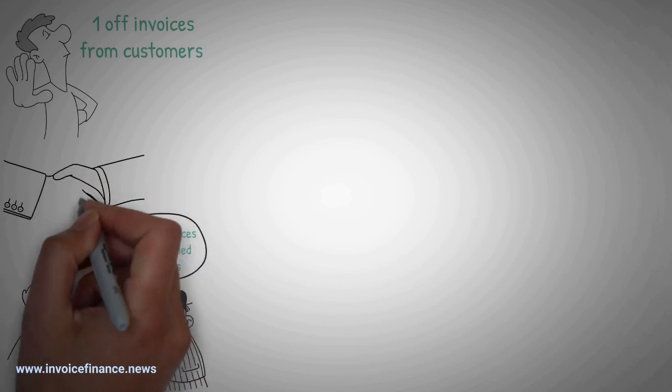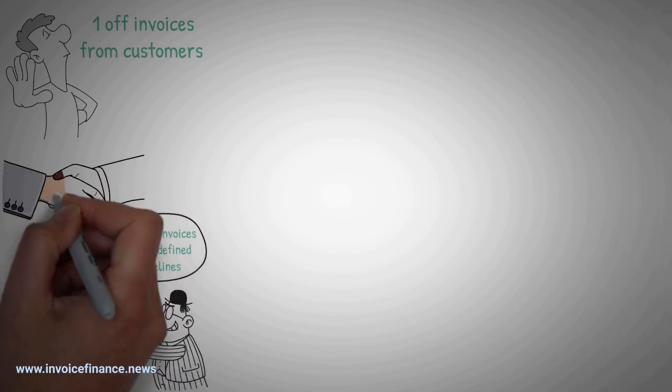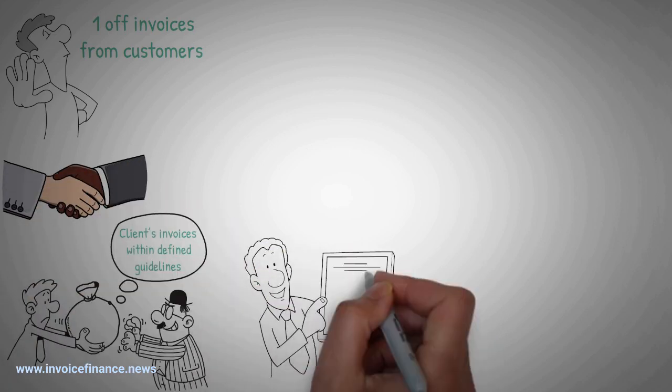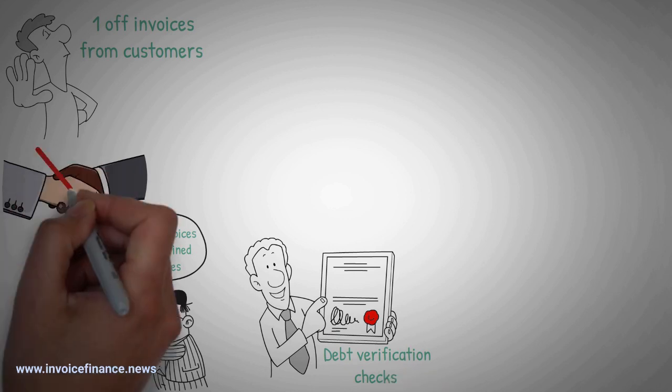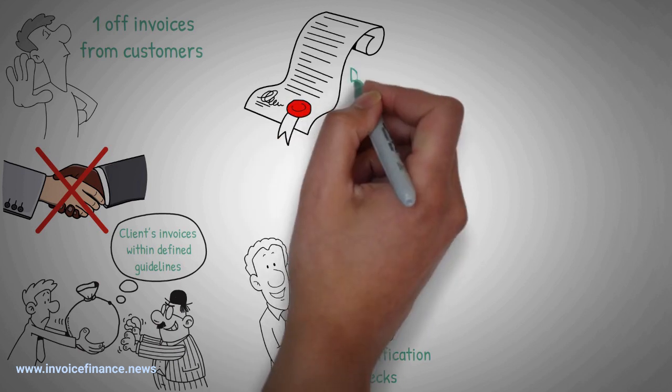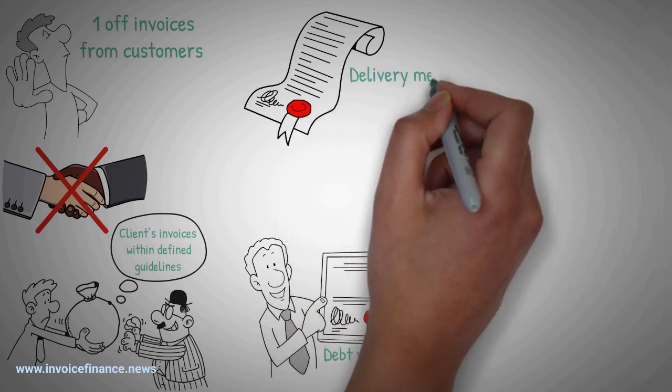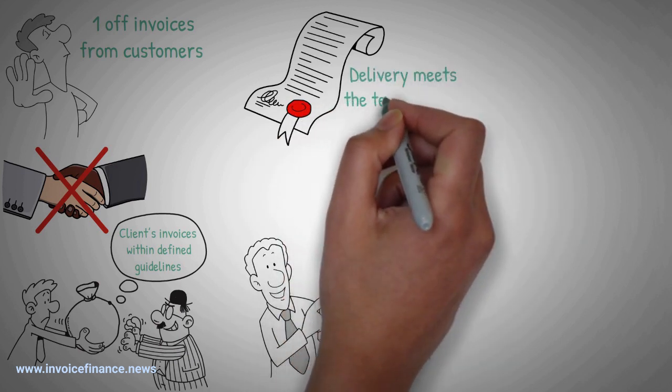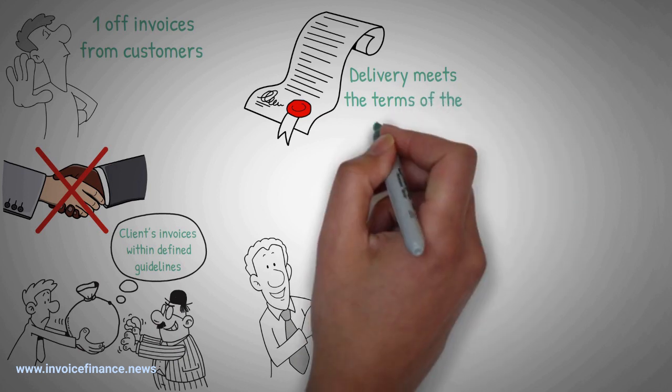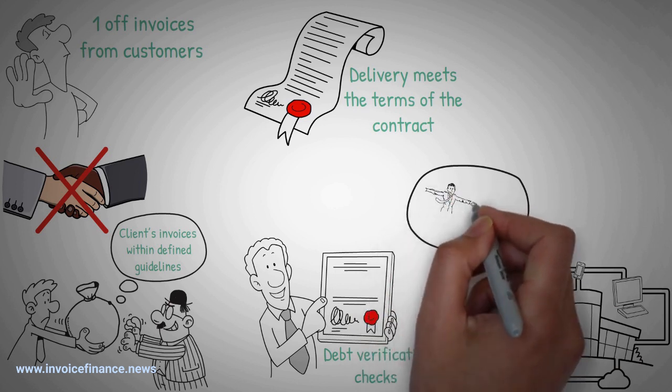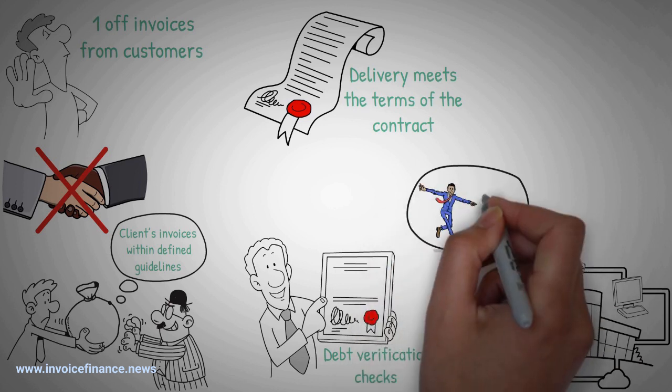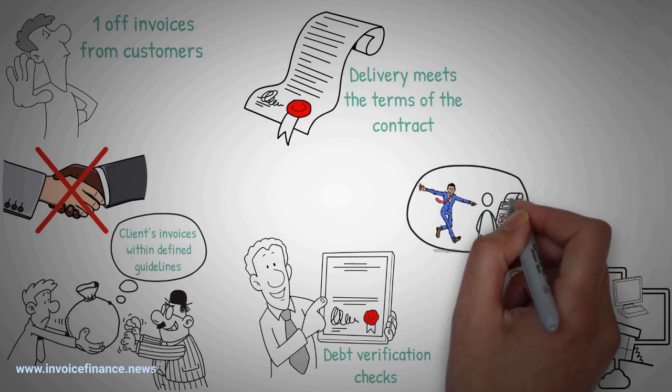A relationship of trust is needed. The invoice financier has to continually monitor that all invoices in the approved sales ledger are genuine. This is done by debt verification checks. If fake invoices are discovered, then the relationship will be damaged. Debt verification involves a company providing evidence that a delivery has been signed for on delivery and that the delivery meets the terms of the contract. A factoring firm will often contact the debtor to check they are happy with the delivery and that the ensuing invoice is acceptable for payment.